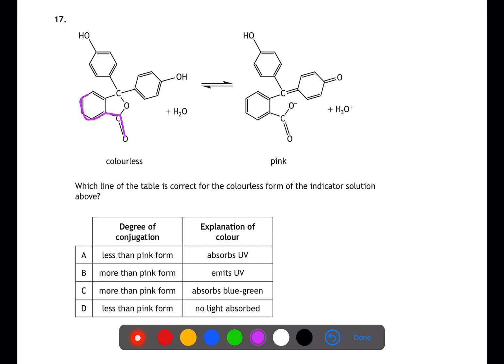The pink version has a larger degree of conjugation, moving from the C double bond O into the ring and then further on around the structure. This means that the colourless form has less conjugation than the pink form, so we can ignore B and C. For something to be colourless, then this means the gap between the HOMO and the LUMO must be of energy which is greater than visible light. This means that the molecule must be absorbing in the ultraviolet, and therefore A is the answer.